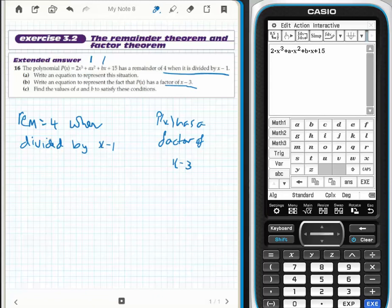The remainder theorem tells me that when P(X) is divided by X minus 1, therefore P(1) equals the remainder, which is 4. The factor theorem tells me that if X minus 3 is a factor, then P(3) should equal 0.